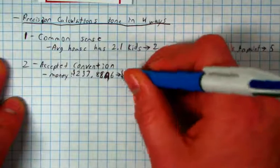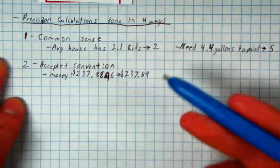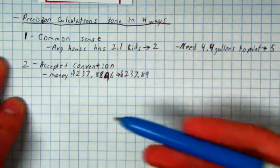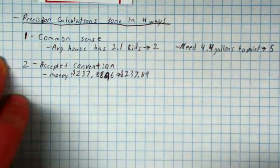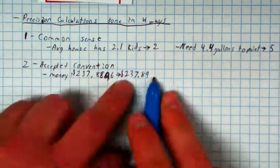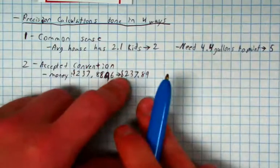Because that's what we've accepted as convention. Now, some of you might say, it makes more sense just to round up to $238, nobody cares about that 11 cents. Some of you might say, I don't care about the penny, round up to the 90, that doesn't make any sense. But this is the accepted convention we've all agreed on.